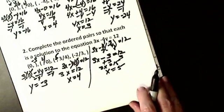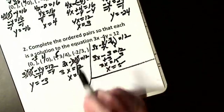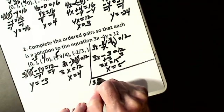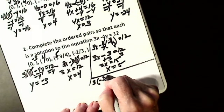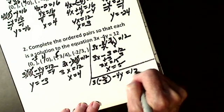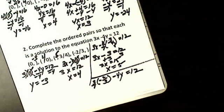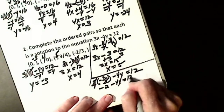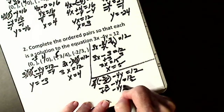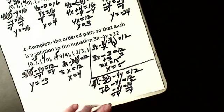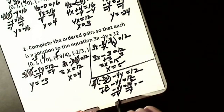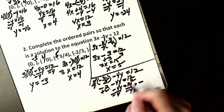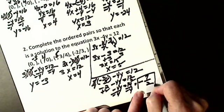We'll do one more with a fraction. X is negative 2 thirds. I have 3 times negative 2 thirds minus 4y equals 12. I put my 3 over 1 and cancel the 3s: 1 times negative 2 is negative 2. So negative 2 minus 4y equals 12. Add 2: negative 4y equals 14. Divide by negative 4: y equals negative 14 over 4. Simplify — 2 into 14 is 7, 2 into 4 is 2 — so y equals negative 7 halves.